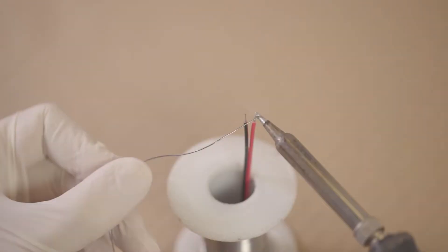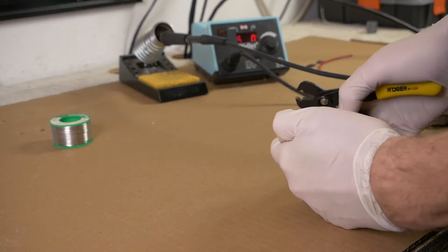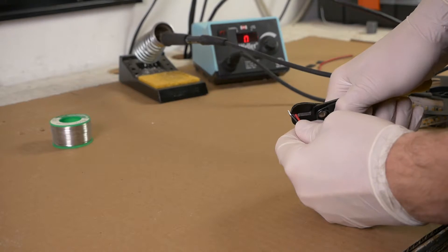We'll tin the wire now too. Twist the strands together and apply some solder to the wire. Don't strip it back too far, you don't want too much bare wire exposed, because if the wires get twisted, they could short together.